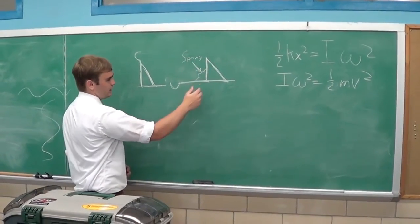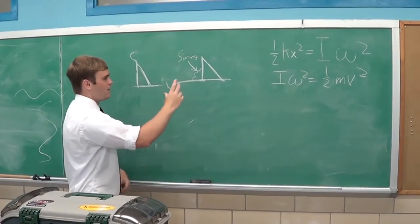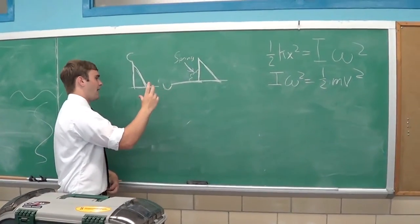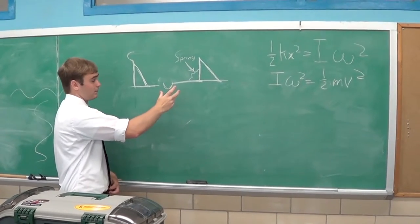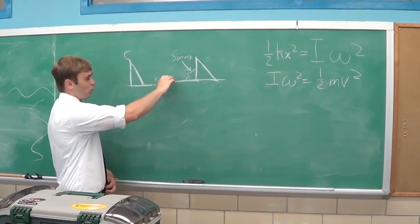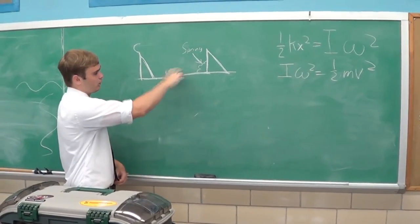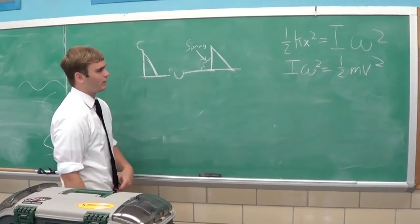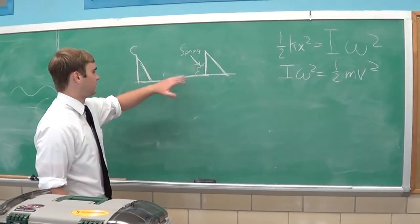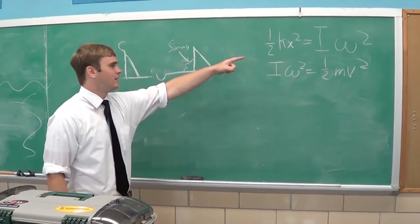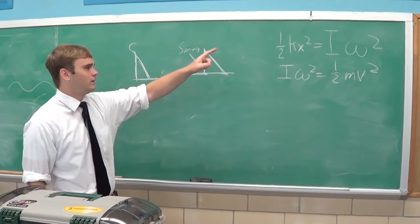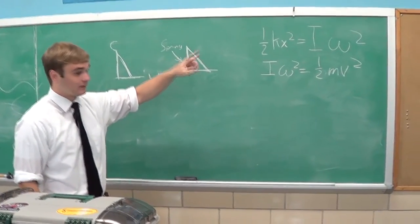the spring right here extends and potential energy is added to the system. So once it's fully extended here in a normal catapult, an outside force holds the arm down. Now at this point when the outside force is holding the arm down, the system has a kinetic energy of half the spring constant times the displacement of the spring squared.